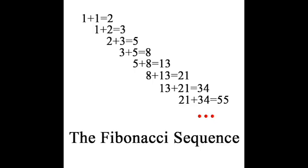If you've never heard of this sequence, this probably makes no sense, so I will explain. Every number after the first two is the sum of the preceding ones. So 0 plus 1 equals 1. 1 plus 1 equals 2. 1 plus 2 equals 3. 2 plus 3 equals 5. 3 plus 5 equals 8. 5 plus 8 equals 13. 8 plus 13 equals 21. 13 plus 21 equals 34. And so on.